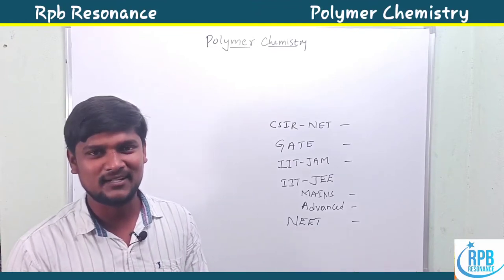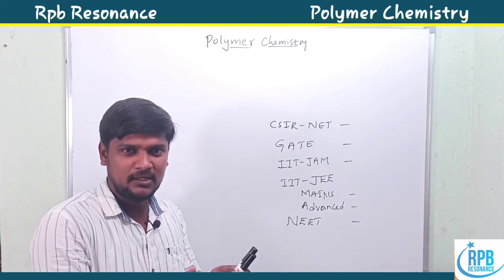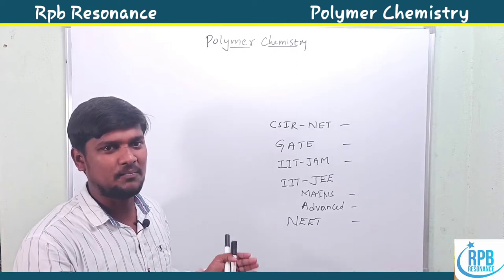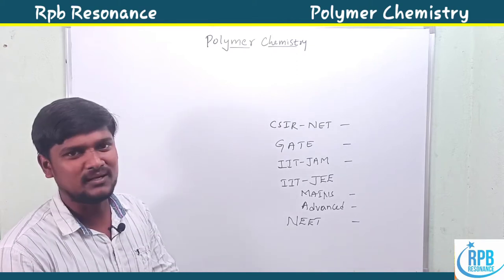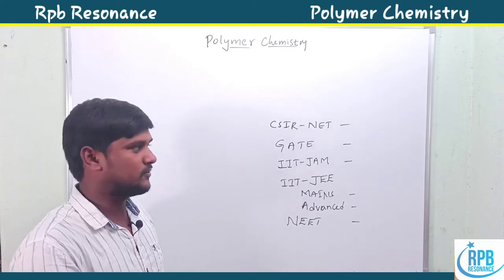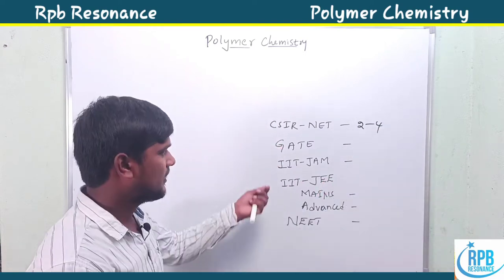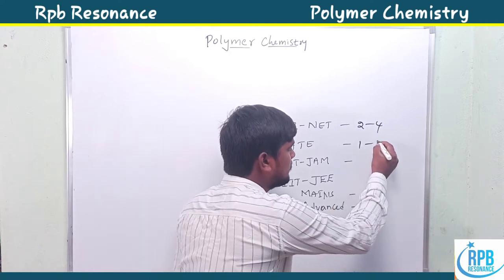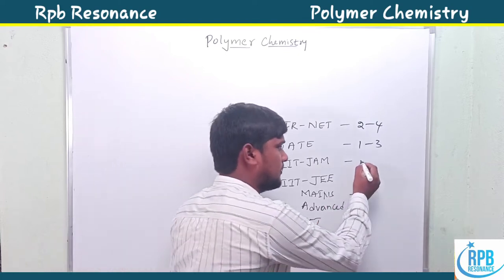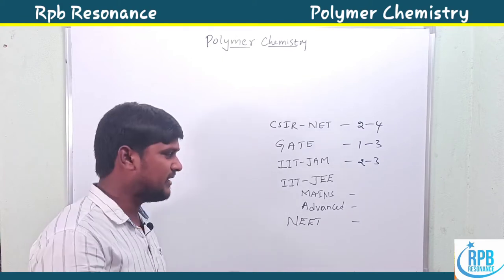Hi everyone, welcome to RPB Resonance Chemistry. Today I'll announce a new series of videos on a small but important topic in competitive exams of chemistry. The topic is polymer chemistry. In CSE exams, they give two to four marker questions from polymer chemistry. For IIT JEE Mains and Advanced, it carries two to three marks.